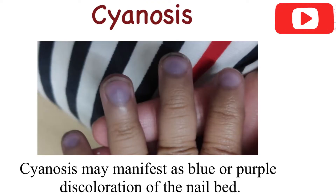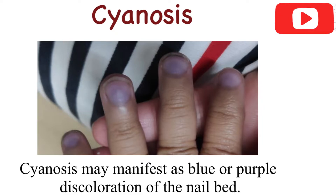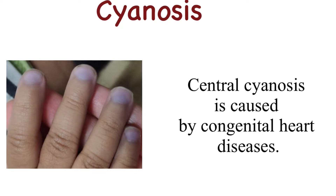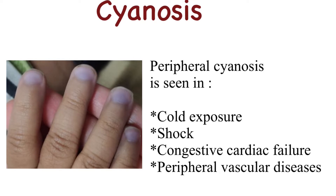Cyanosis may manifest as blue or purple discoloration of the nail bed. It occurs as a result of low oxygen saturation causing accumulation of deoxyhemoglobin in the small blood vessels of the extremities. Central cyanosis is caused by congenital heart diseases.